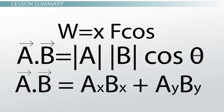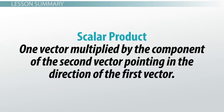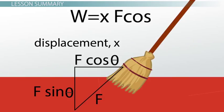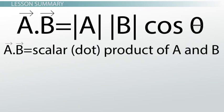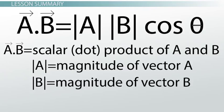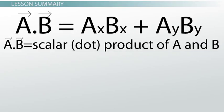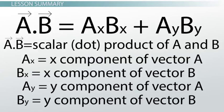Some equations call for a dot product, while others call for a cross product. With work, your answer is a scalar — it doesn't have a direction — so this is an example of a scalar product. A scalar product, in a nutshell, is one vector multiplied by the component of the second vector pointing in the direction of the first vector. The first equation: take the magnitude of vector a, multiply by the magnitude of vector b, and multiply by the cosine of the angle between them. If you're given vectors in component form, use the second equation: multiply the two x components, the two y components, and the two z components together, then add them all up. And that's how you calculate a scalar product.